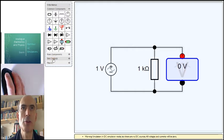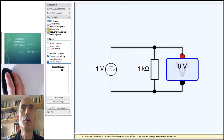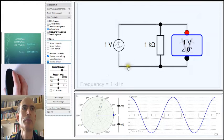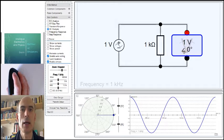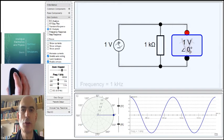And that happens under SIM controls. Click on AC analysis. And now, my voltmeter reads one volts at a phase angle of zero degrees.